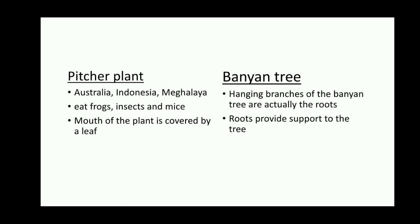We have also learnt about the Pitcher plant. It is found in Australia, Indonesia, and in Meghalaya. The Pitcher plant eats frogs, insects, and mice, and attracts them with a smell. The mouth of the plant is covered by a leaf. Finally, we learnt about the Banyan tree — the hanging branches of the Banyan tree are its roots, and these roots give support to the tree.